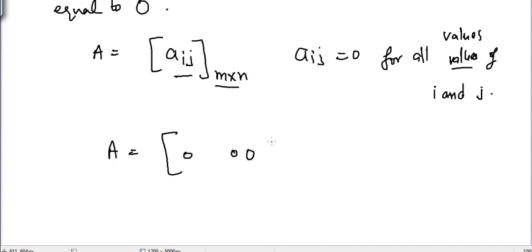For example, I have a matrix like this. It's a one cross three matrix and it's a null matrix because all three elements are equal to zero. I can write more examples, something like that, it's three cross one matrix.